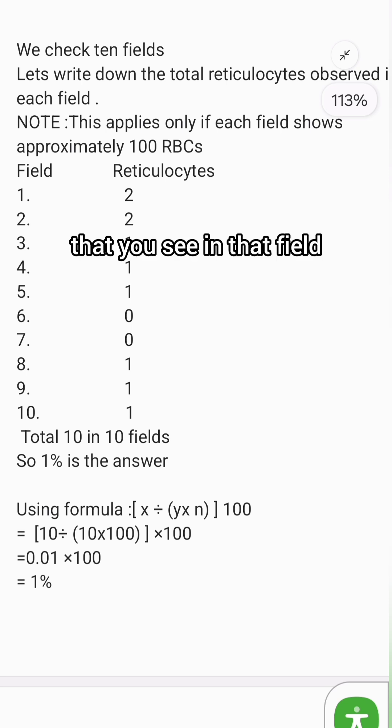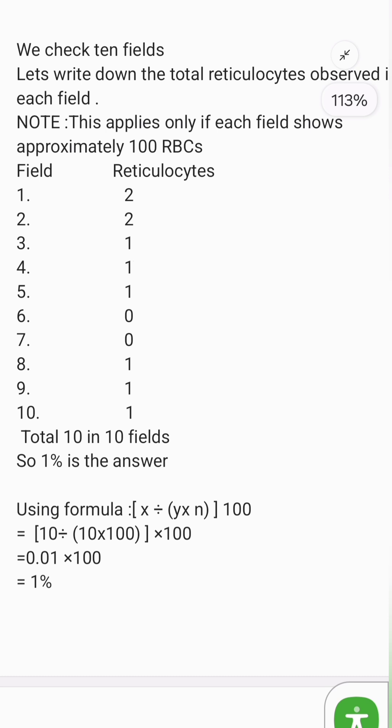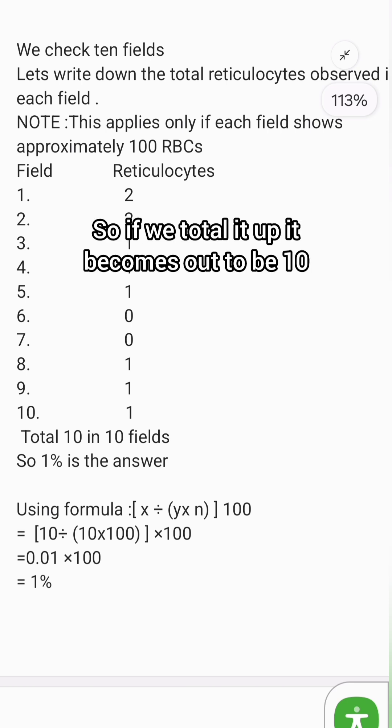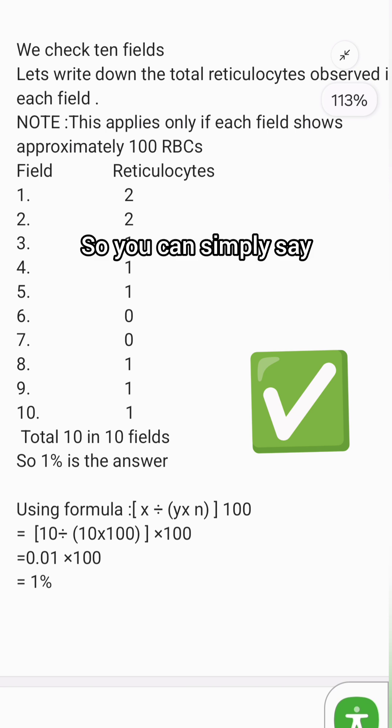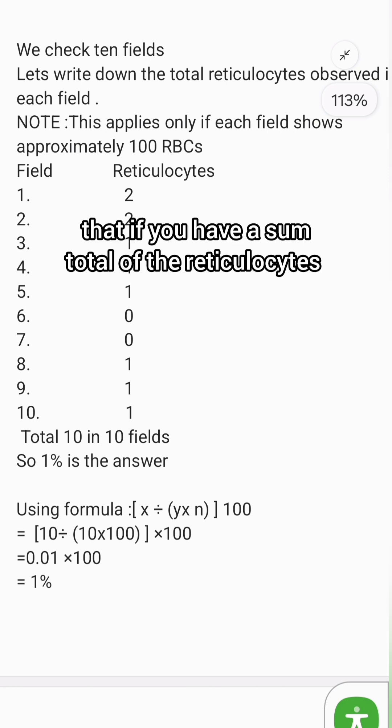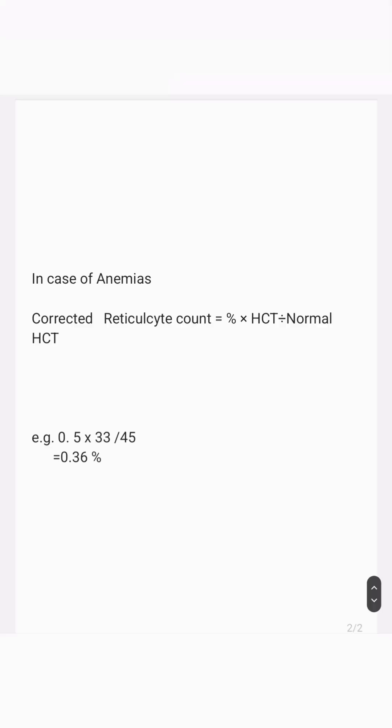Note that this formula I'm applying is for 100 RBCs per field, and I have written 2, 2, 1, 1, 1 as the number of reticulocytes. If we total it up, it becomes 10. So using the formula 1 × (yx ÷ n) × 100, it comes out to 1%. You can simply say that if you have a sum total of the reticulocytes, just remove one zero and you get the answer in percentage.